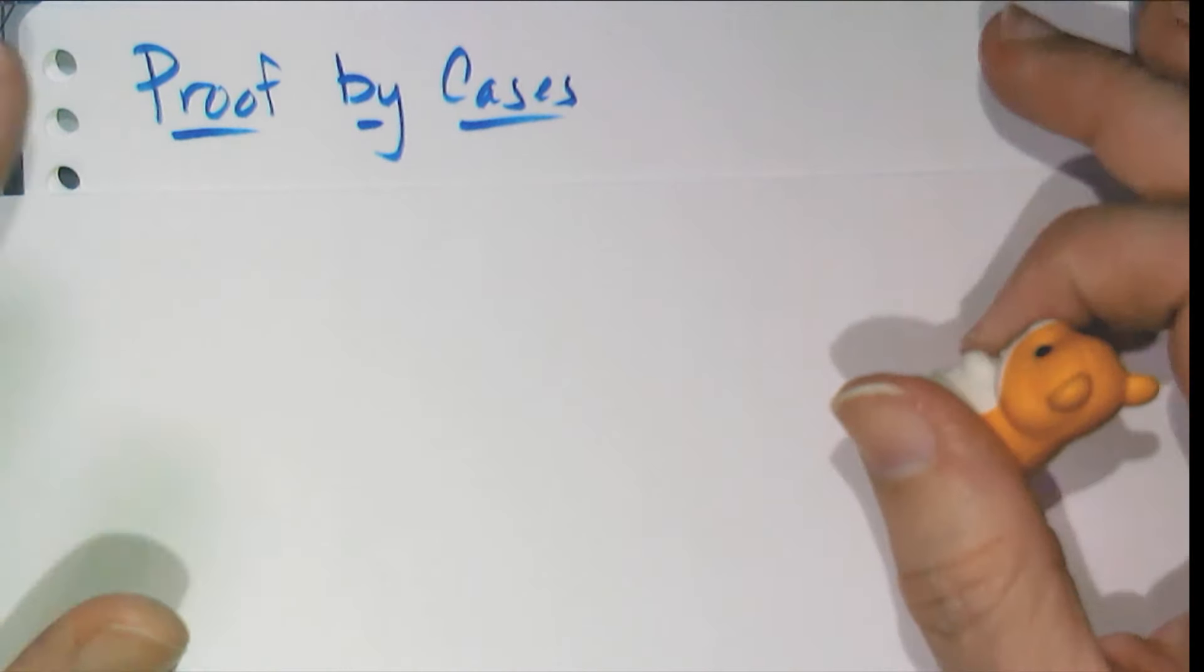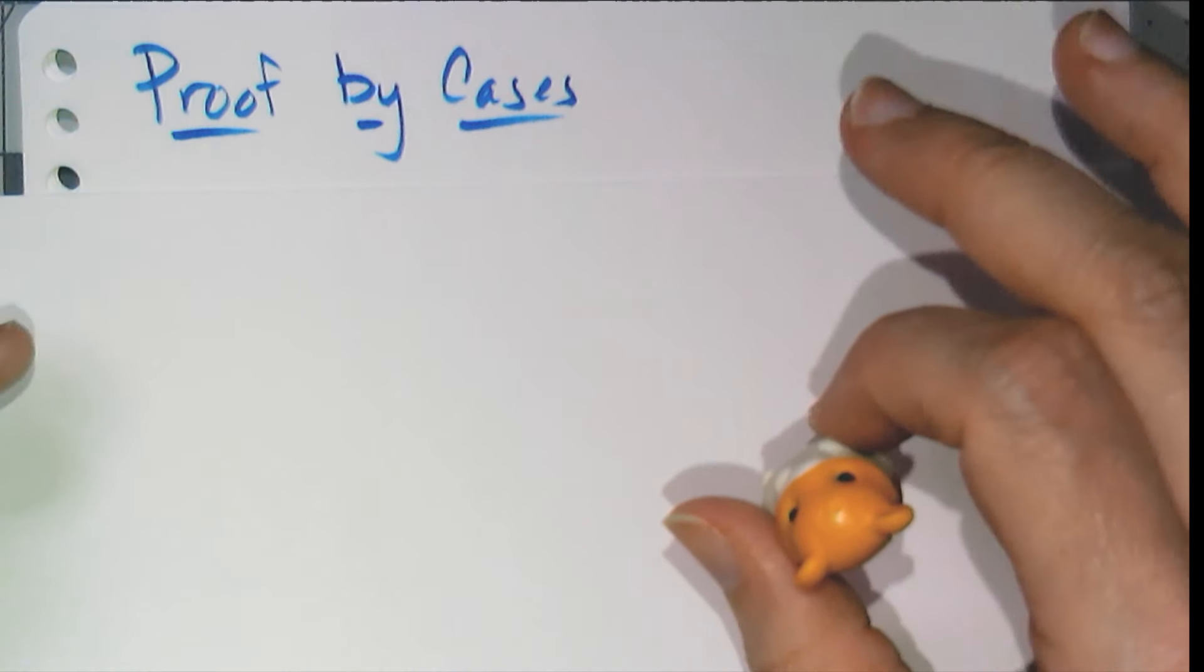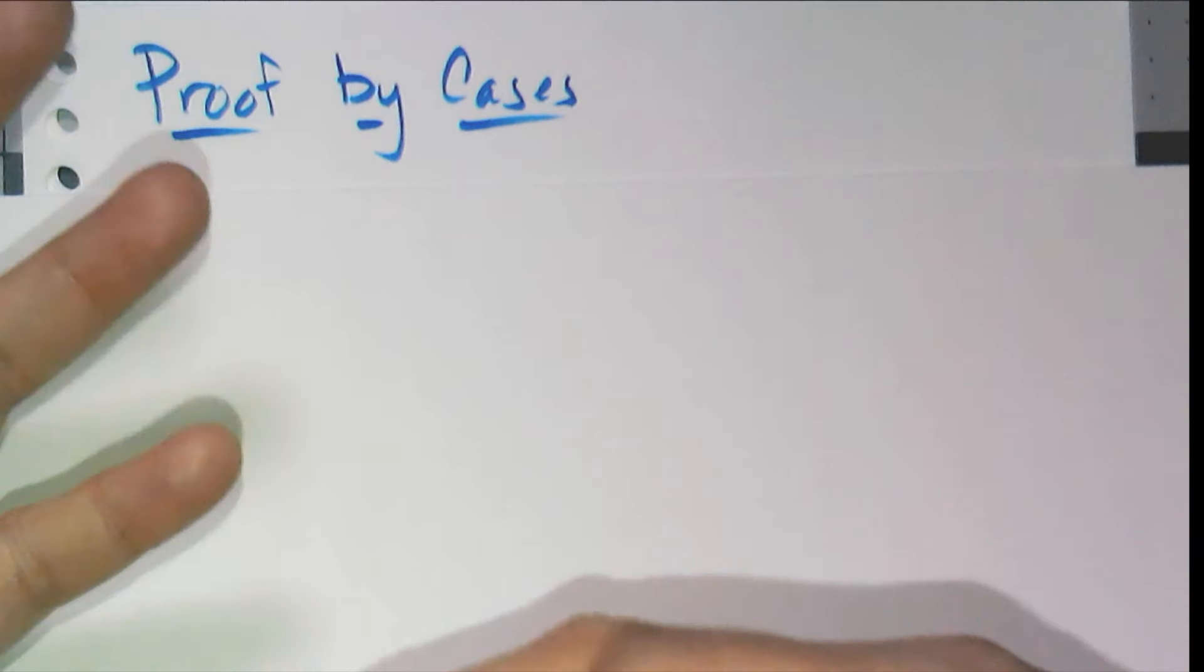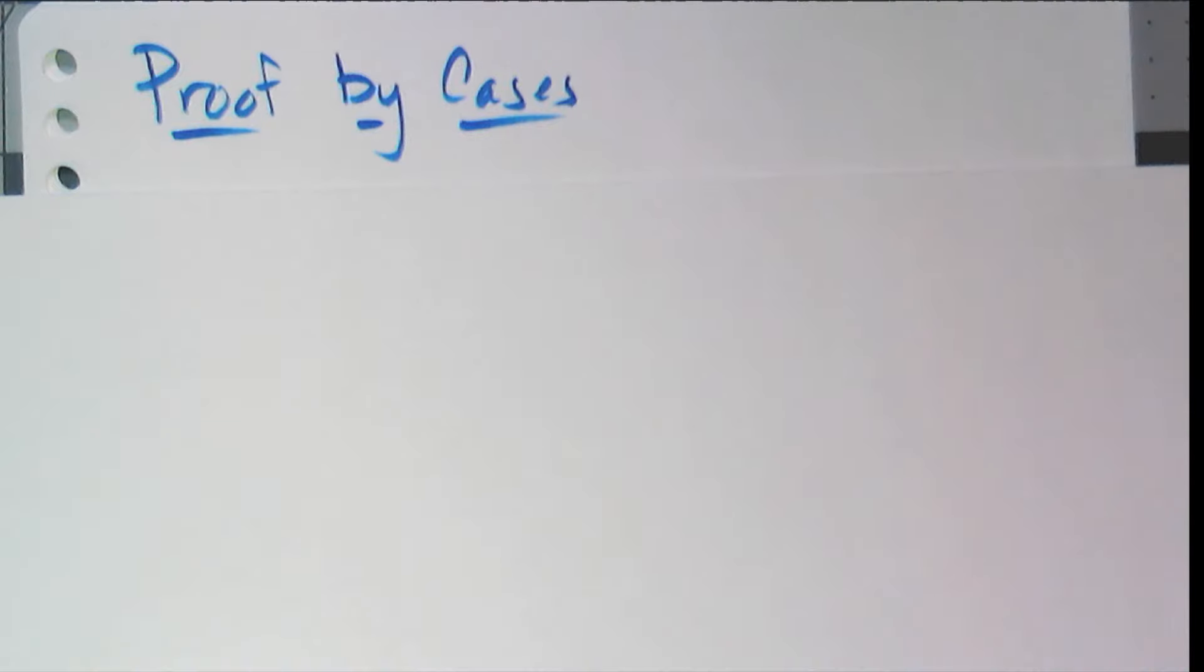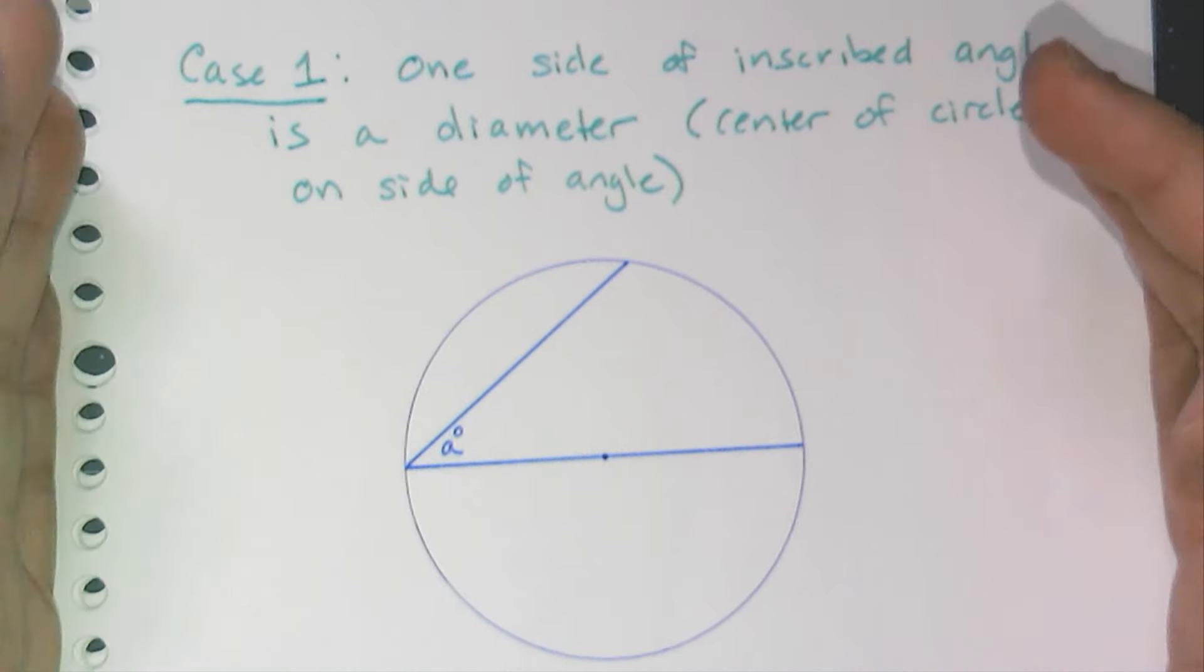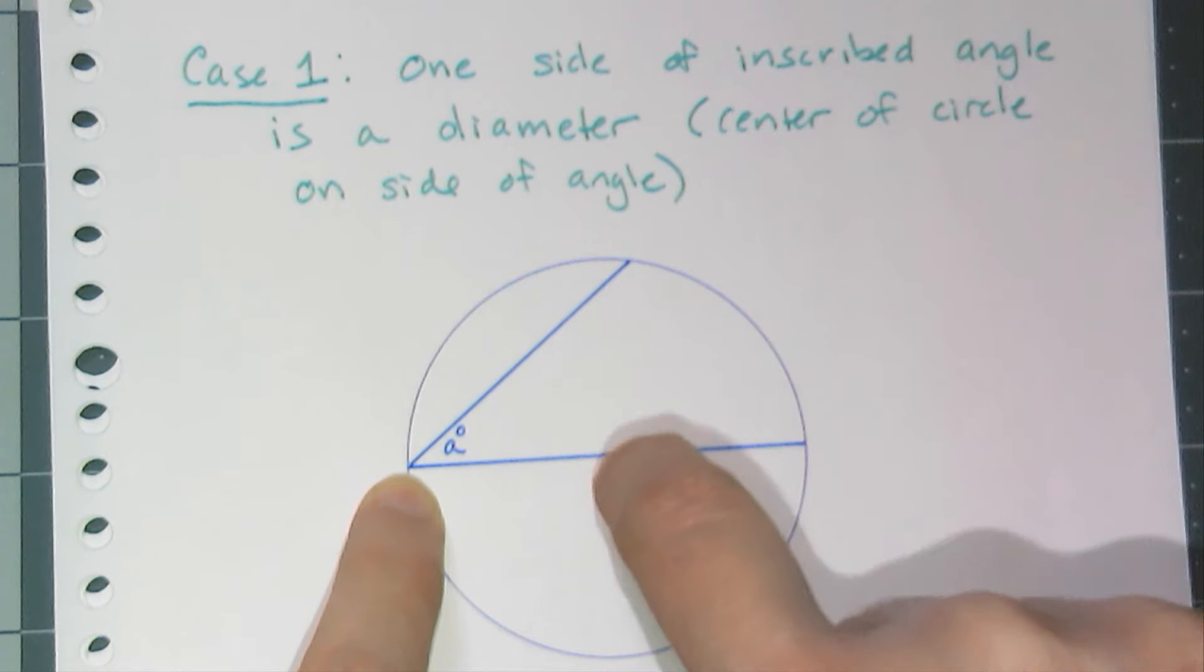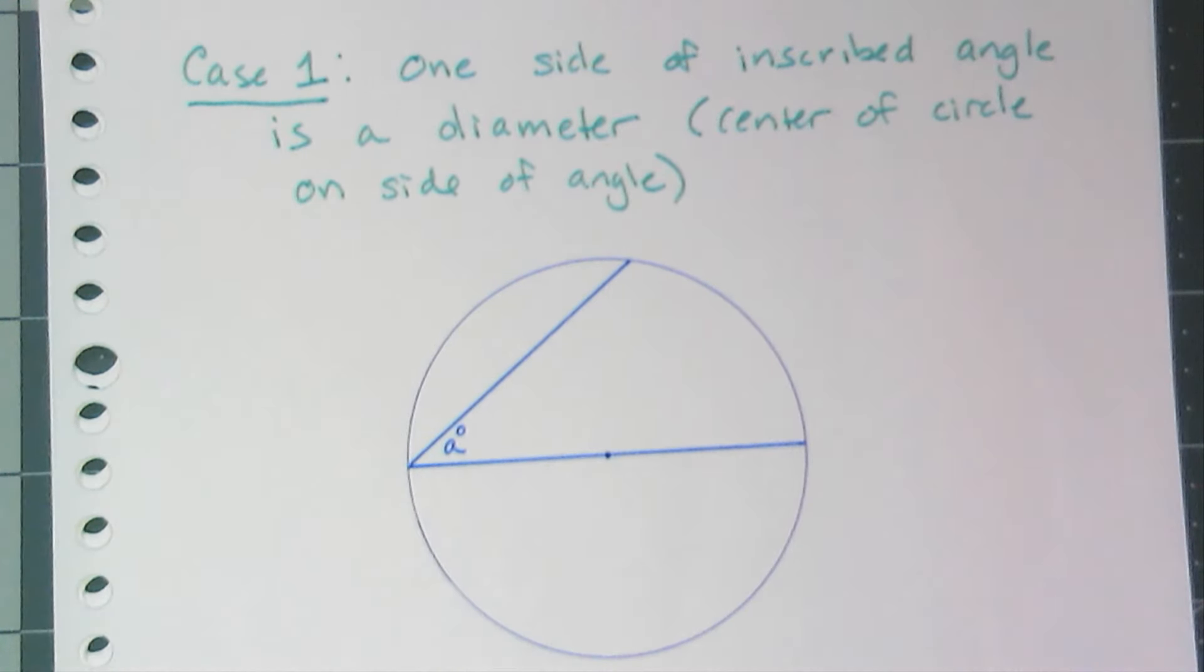Now we're talking about inscribed angles and cases meaning different versions and your brain might go to, well there are different kinds of angles, so maybe there's a case with right angles or obtuse angles or acute angles, but that's not really what's happening for this particular conjecture. So if I think about this conjecture and I want to prove it, the easiest version for me to prove is when one side of the angle is actually the diameter of the circle, meaning the center of the circle is on a side of the angle. And you're like, okay, well how is that easy to prove?